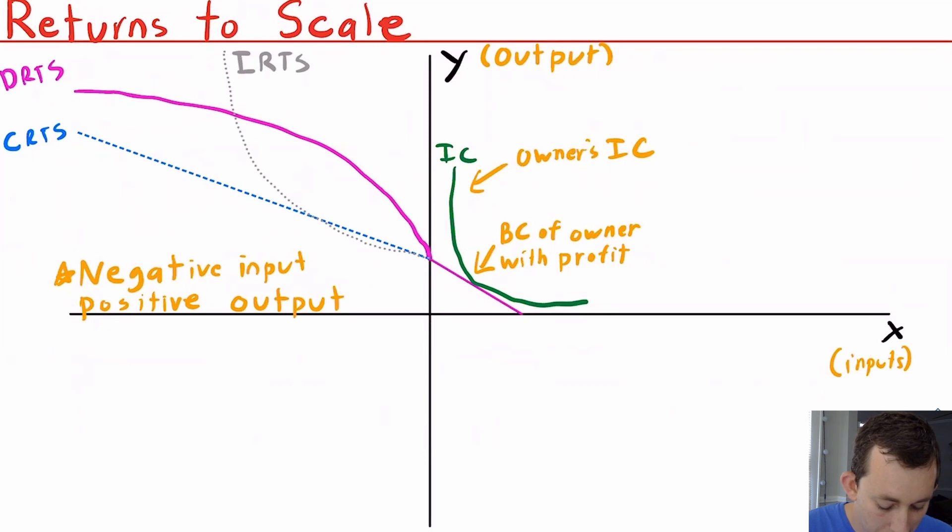Notice that we are using both the first quadrant and the second quadrant of our axes. I'm going to put y on the y-axis—that's going to be our output good. And on the x-axis is going to be our inputs. This could be a vector of inputs, but for now, let's just assume one input, one output. Notice that the pink line here is our production possibility frontier or production set. It's got decreasing returns to scale because it's concave.